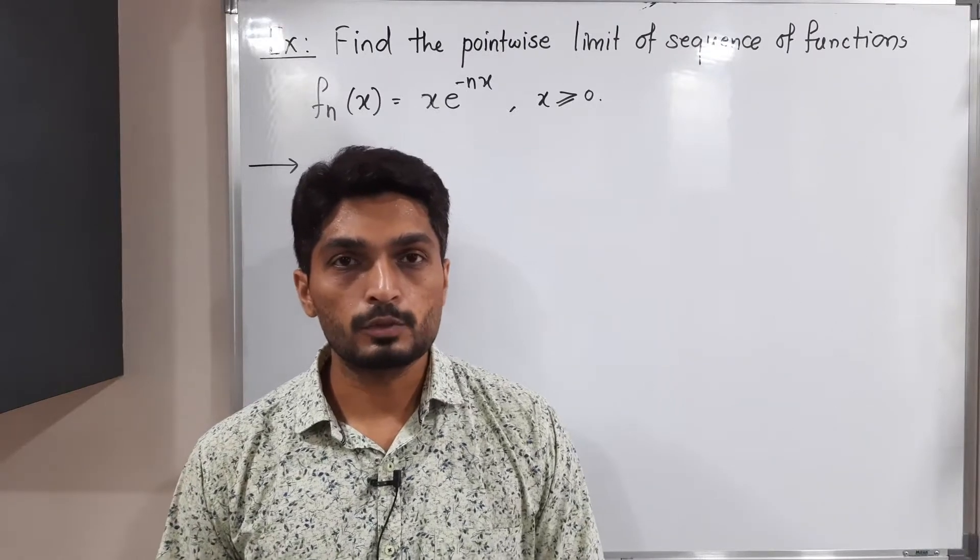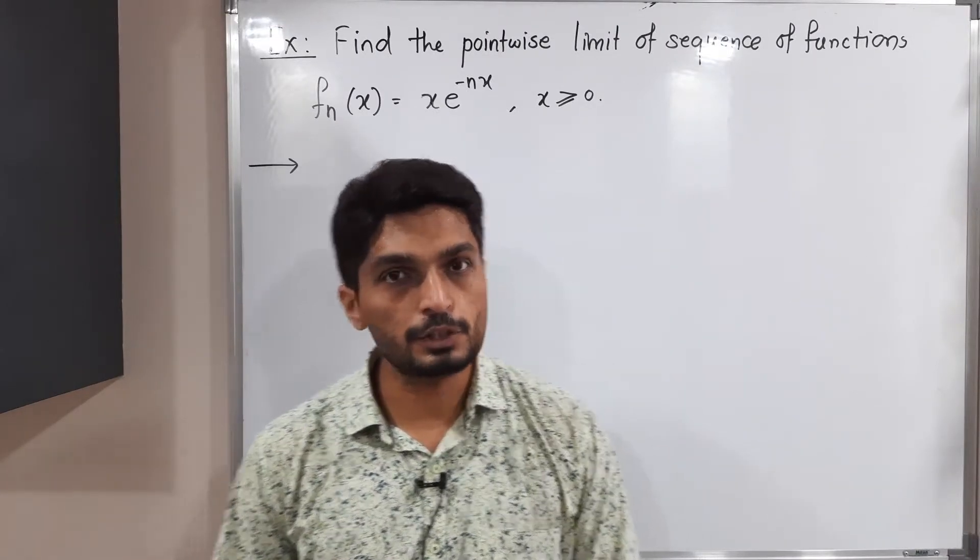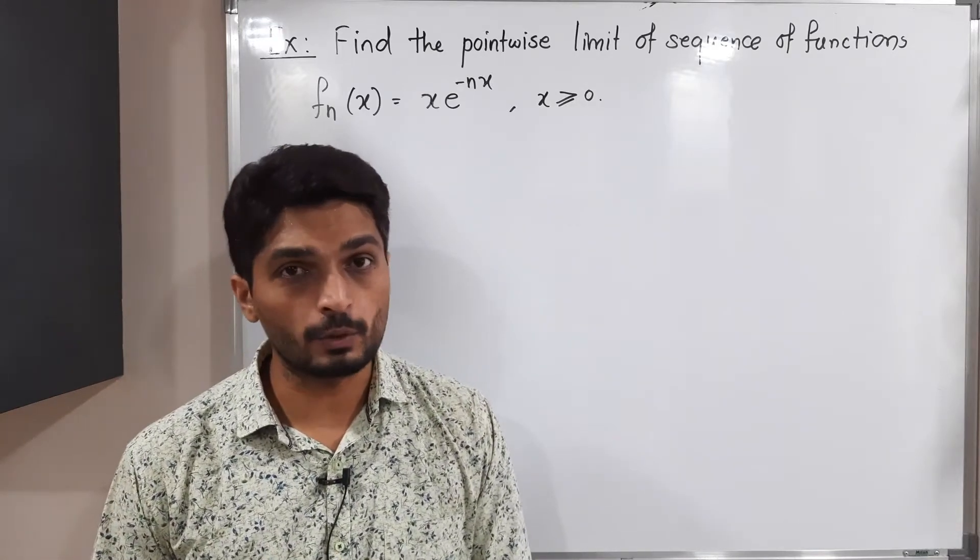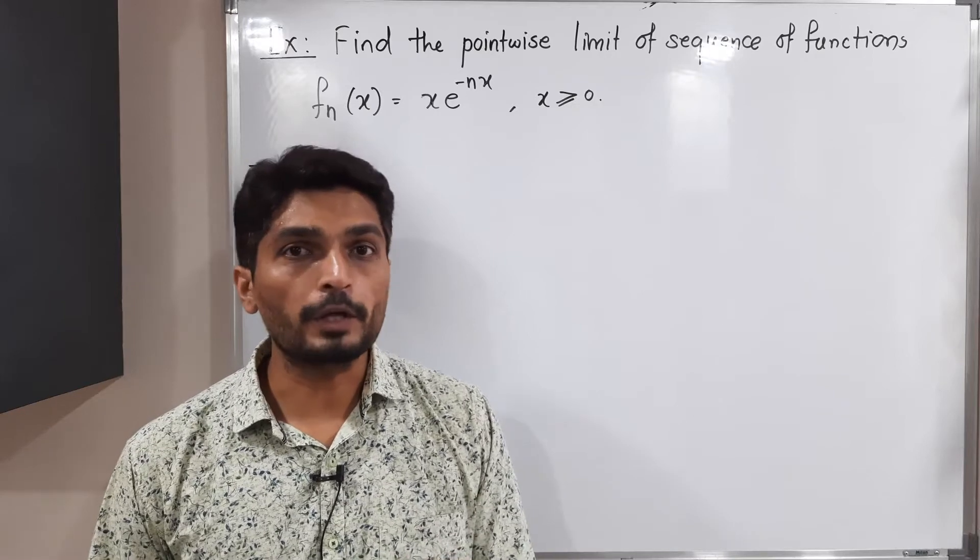Let us discuss this example. In this example, we have a sequence of functions fn(x) = xe^(-nx), where x ≥ 0. We have to find its pointwise limit.